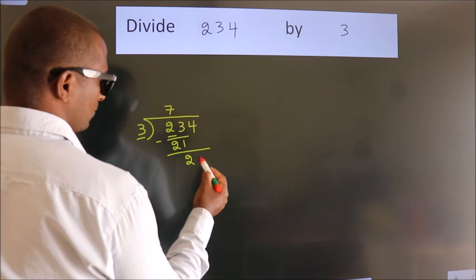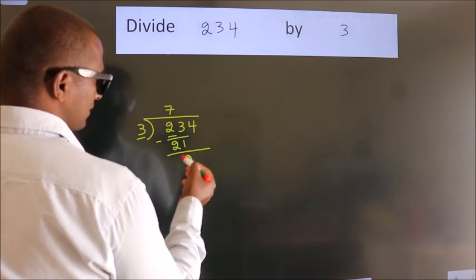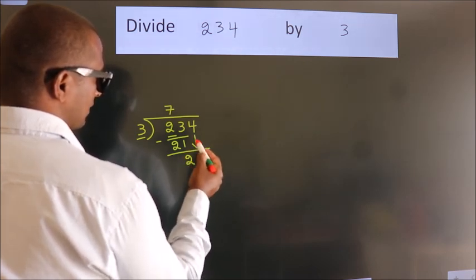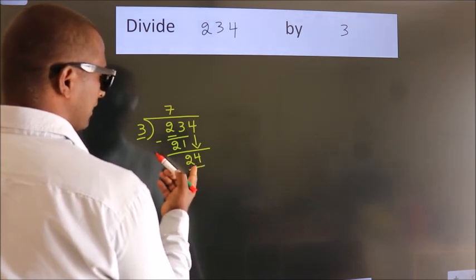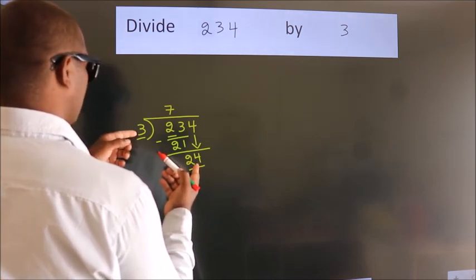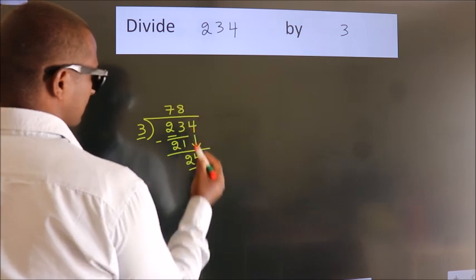After this, bring down the next number, 4, to get 24. When do we get 24 in the 3 table? 3×8=24.